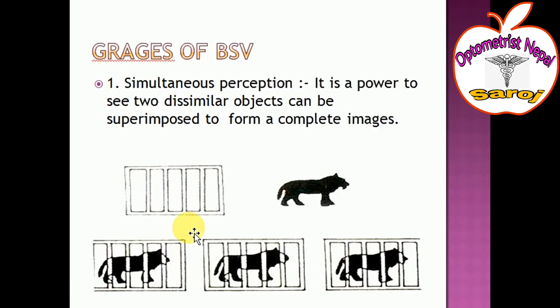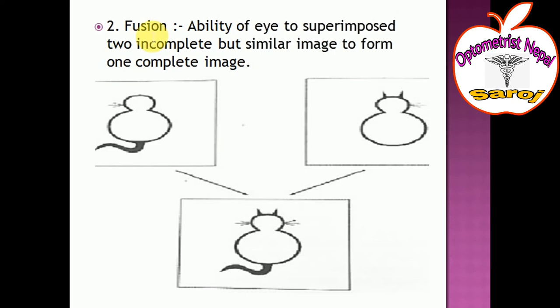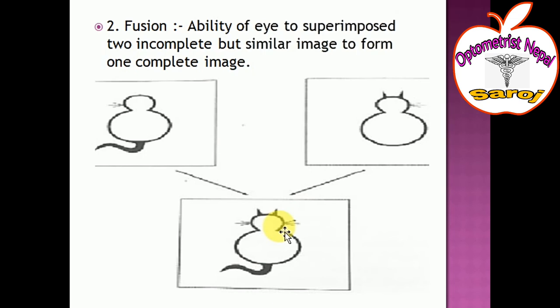The second grade is fusion. Fusion is the ability of both eyes to superimpose two incomplete but similar images to form one complete image. For example, there is one incomplete rat image and another incomplete rat image, and through the fusion of both the right and left eyes, one complete image is formed. This is called the fusion grade of binocular single vision.